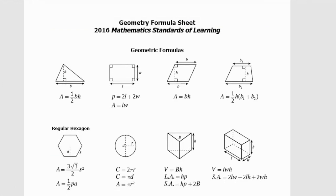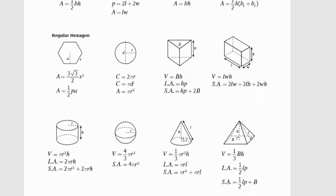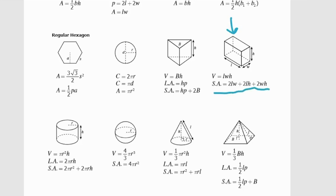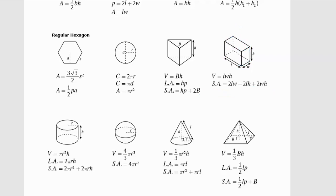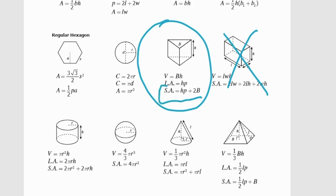On the Virginia formula sheet, rectangular prisms have their own formula using 2(wh + lh + lw). Although that formula may seem easier to understand, it tends to cause more errors. Instead, use the general formula SA = HP + 2B, which works for any prism including rectangular ones. Make a note on your formula sheet to use this one and avoid the rectangle-specific formula.